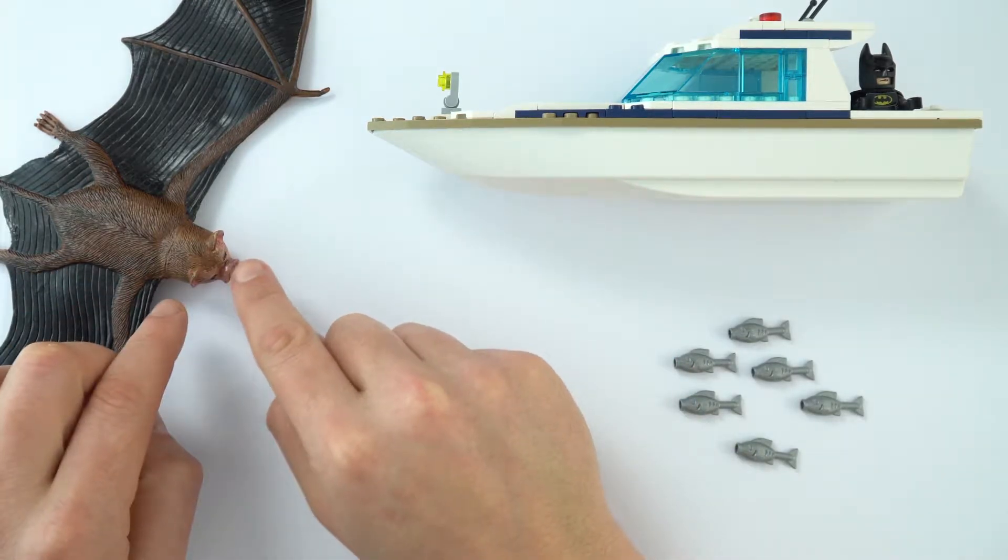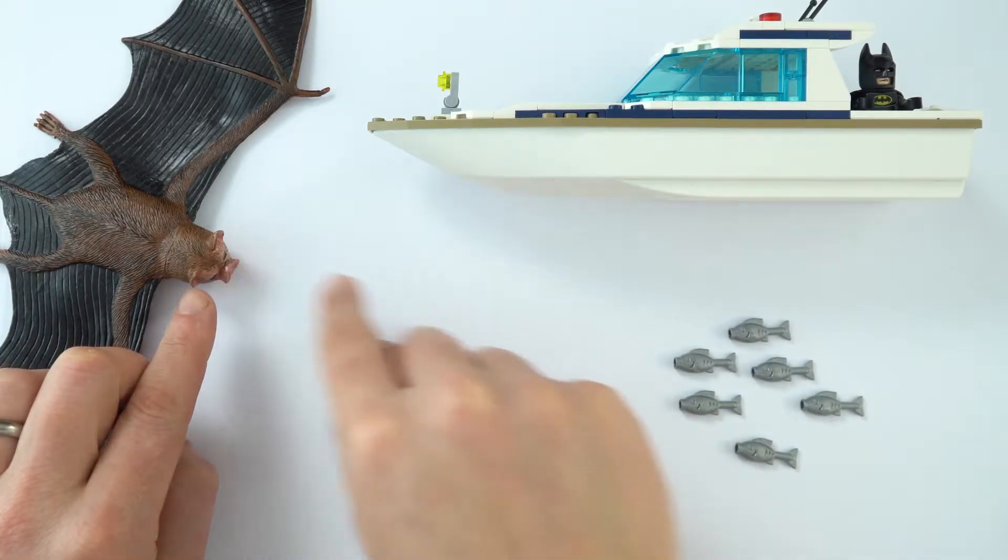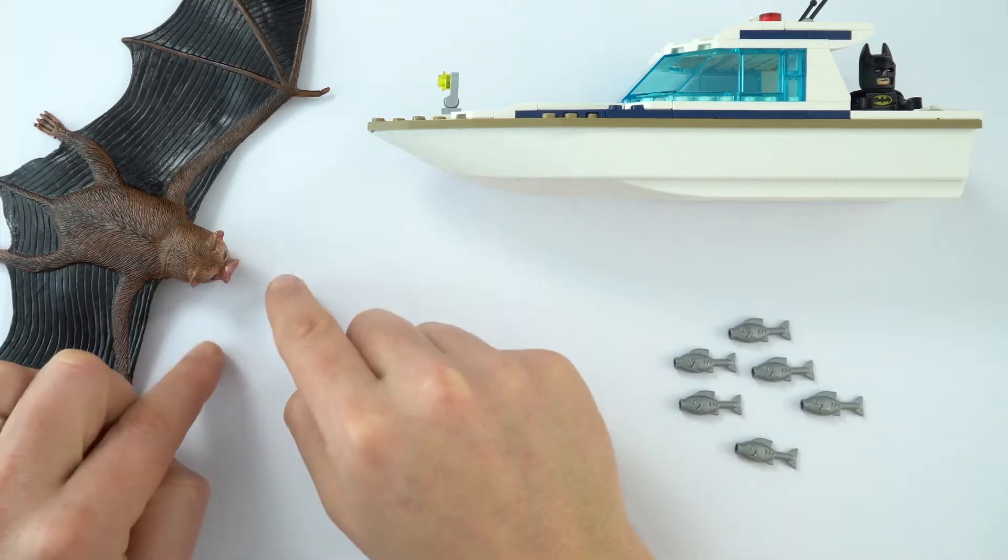And if the bat can detect how long it took for it to go there and come back again, it can then work out the distance.